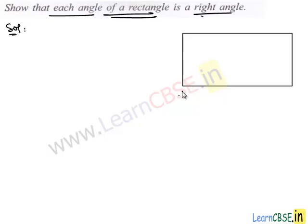According to the problem, we take ABCD as a rectangle, and we have to prove that in this rectangle, each angle is 90 degrees.